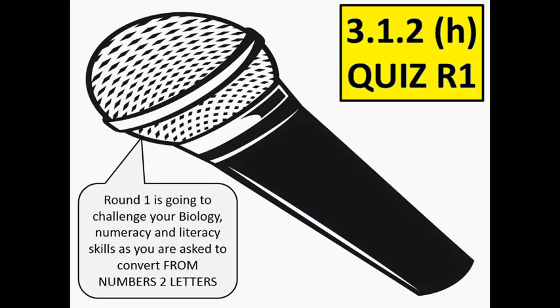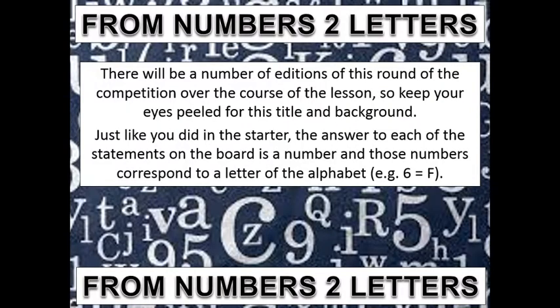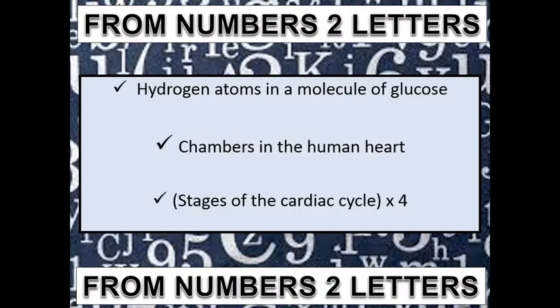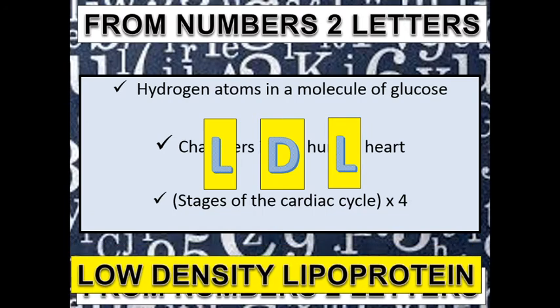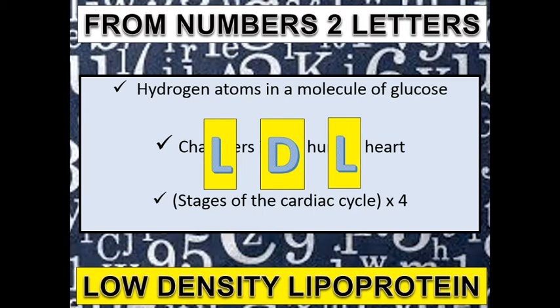Another numbers-to-letters puzzle — the answer is a risk factor for cardiovascular disease. Carbon atoms in a molecule of glucose: 12, so that's L. Chambers in the human heart: four — two atria, two ventricles — so that's D. Stages of the cardiac cycle times four: diastole, atrial systole, ventricular systole — three stages times four is 12, so that's L again. The answer is LDL — low density lipoproteins.